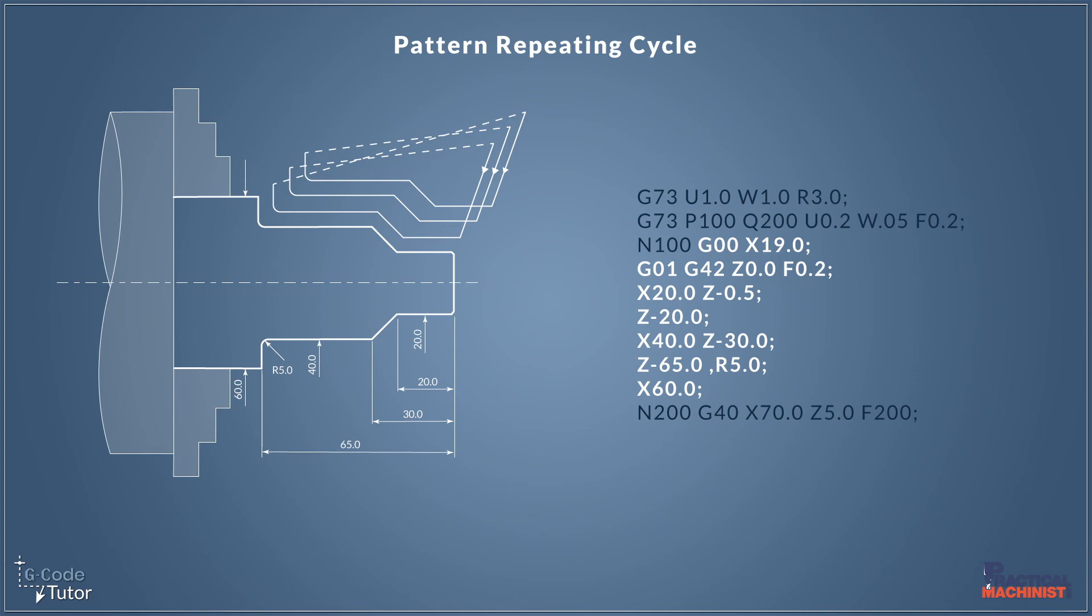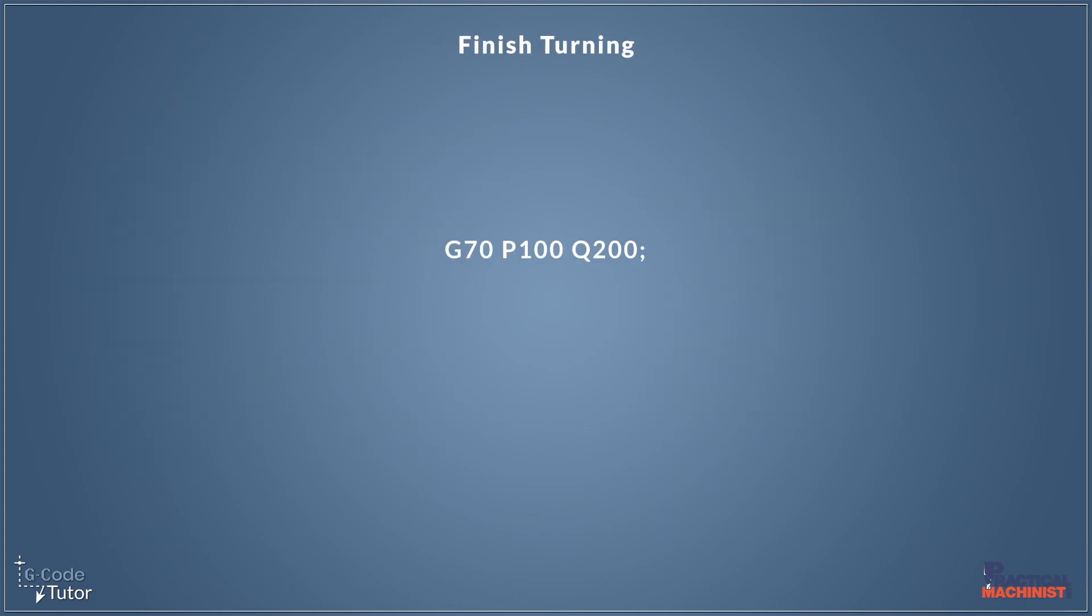Why do we use a subroutine? Well, one very simple answer. When it comes to writing the finishing cycle, we only need to give it this information. We don't need to copy the entire profile again, we just need to tell it G70 P100 Q200 and it will go off and machine that cycle for us. It will machine that pattern to size and then go home. We do need a little bit more information, like changing the tool and safety lines. But when it comes to actually profiling a part, we can just call upon the subroutine by using G70 P100 Q200.